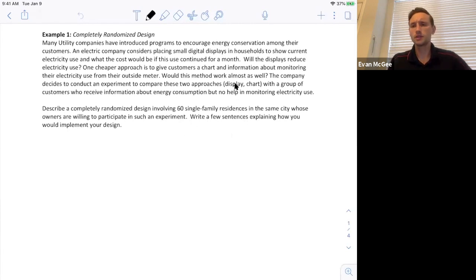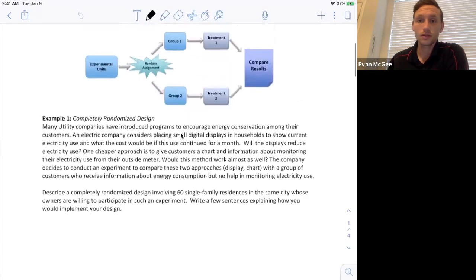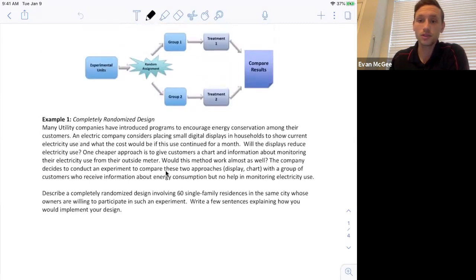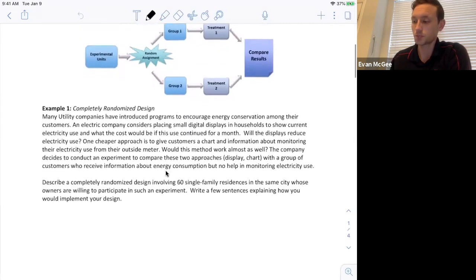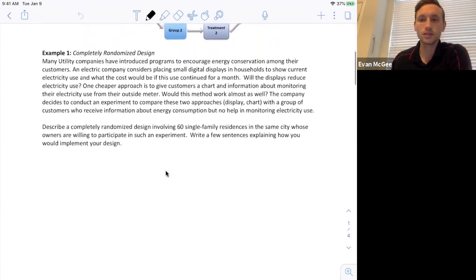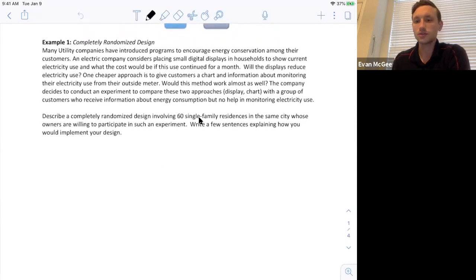We want to compare the display versus the chart and also with the group who receive just information about their energy use and they're not getting any help. There's no chart, no display. This is going to be our control group. We're going to make this design using this information here. So our experimental units are going to be the 60 households.